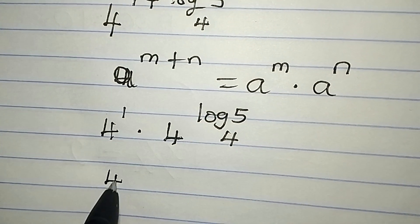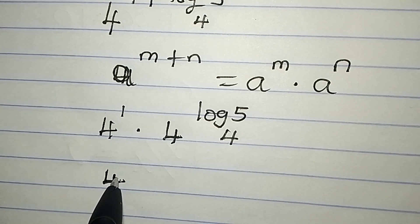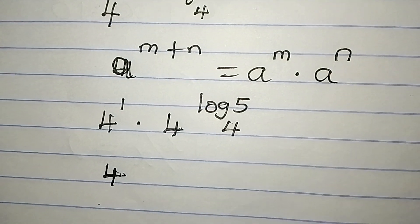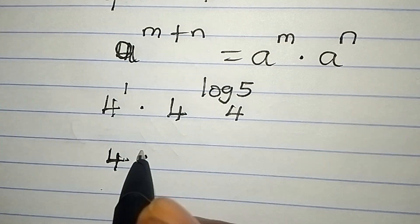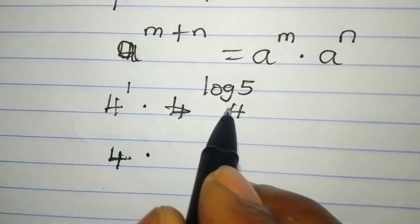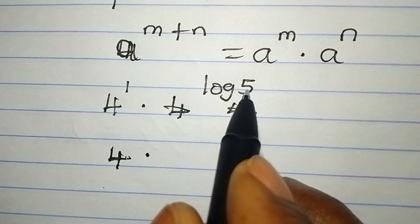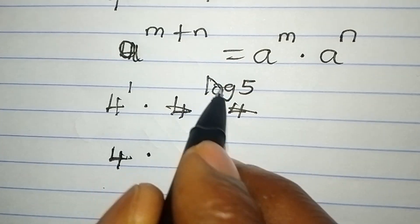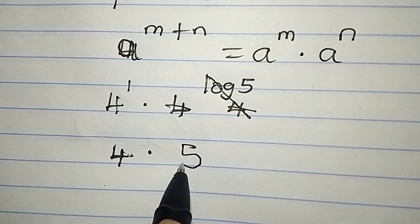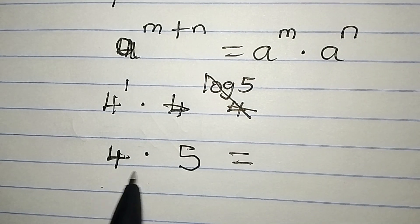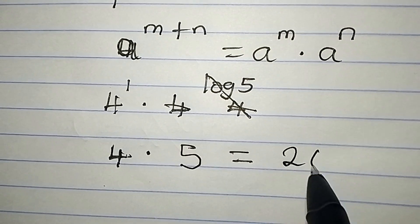This means we are having 4. Remember, 4 to the power of 1 is the same as 4. So we have 4 multiplied by, this is going to cancel this. This will cancel this together. So we have 5 over here. And then we will be having 4 times 5, which is 20.